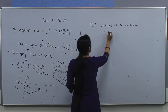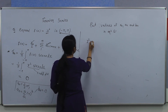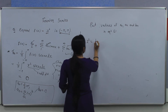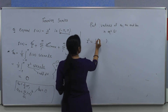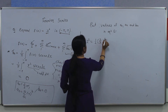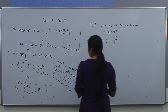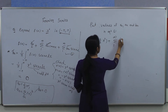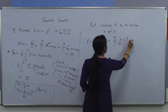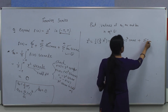So our f(x) was x squared. a₀ is 1/2 of a₀, which was 2π²/3, plus summation 1 to infinity of aₙ. Our value of aₙ is 4 divided by n squared, times minus 1 to the power n, into cos(nx), plus the value of bₙ which is 0.